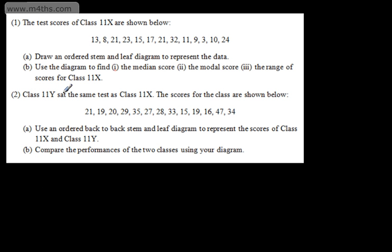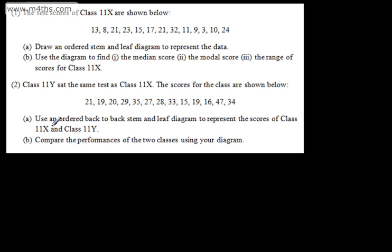In question 2, it says Class 11Y sat the same test as Class 11X. The scores for the class are: 21, 19, 20, 29, 35, 27, 28, 33, 15, 19, 16, 47, and 34 — again 13 scores. In part A, we're asked to use an ordered back-to-back stem and leaf diagram to represent the scores of Class 11X and Class 11Y.